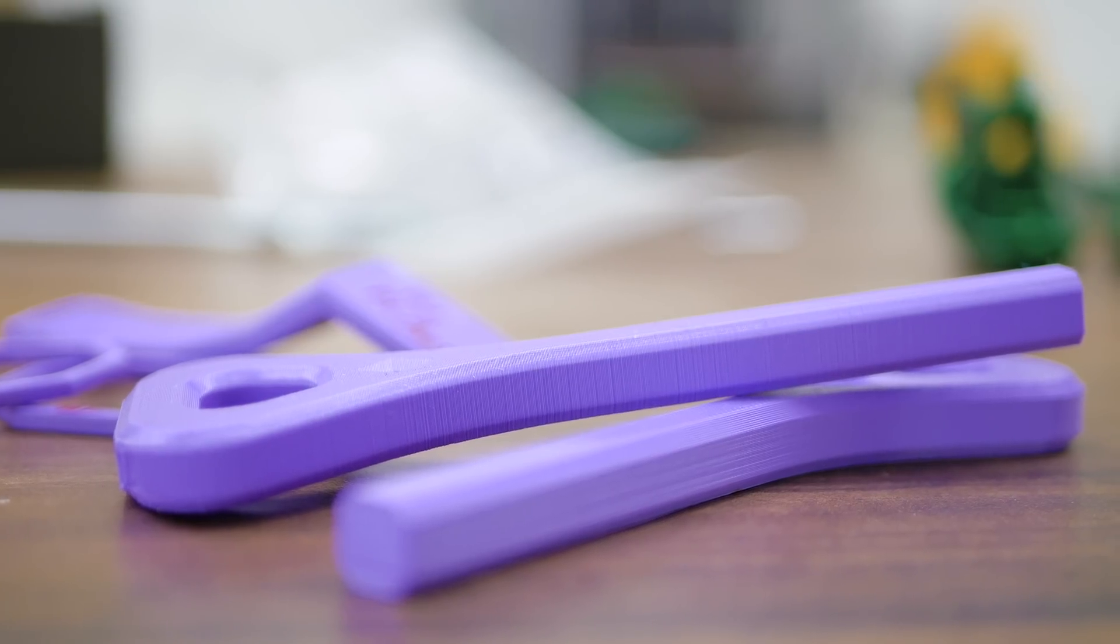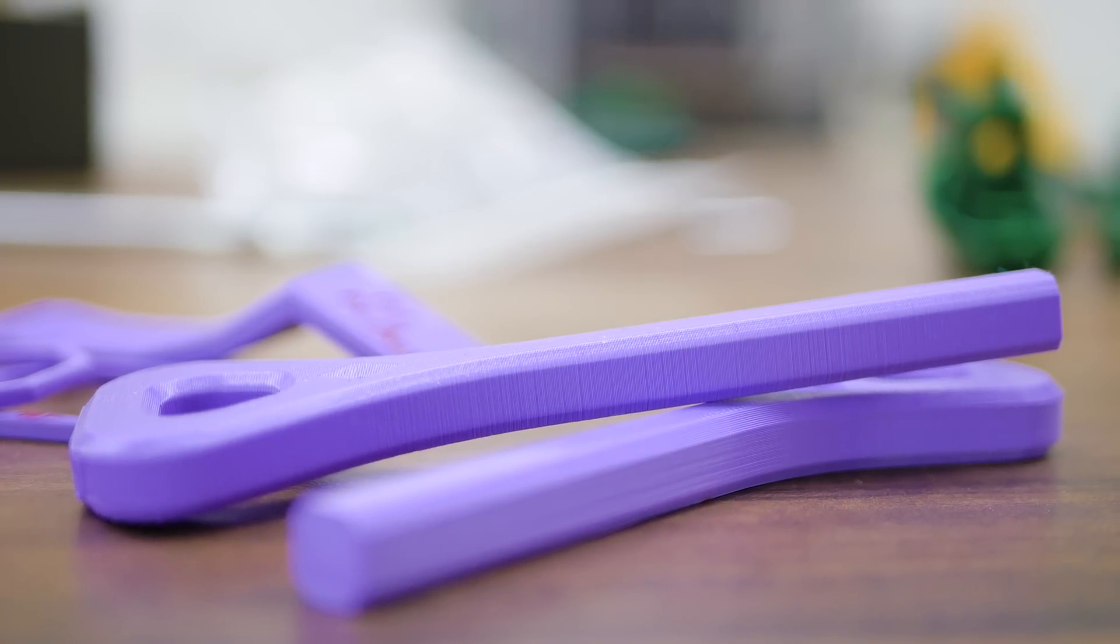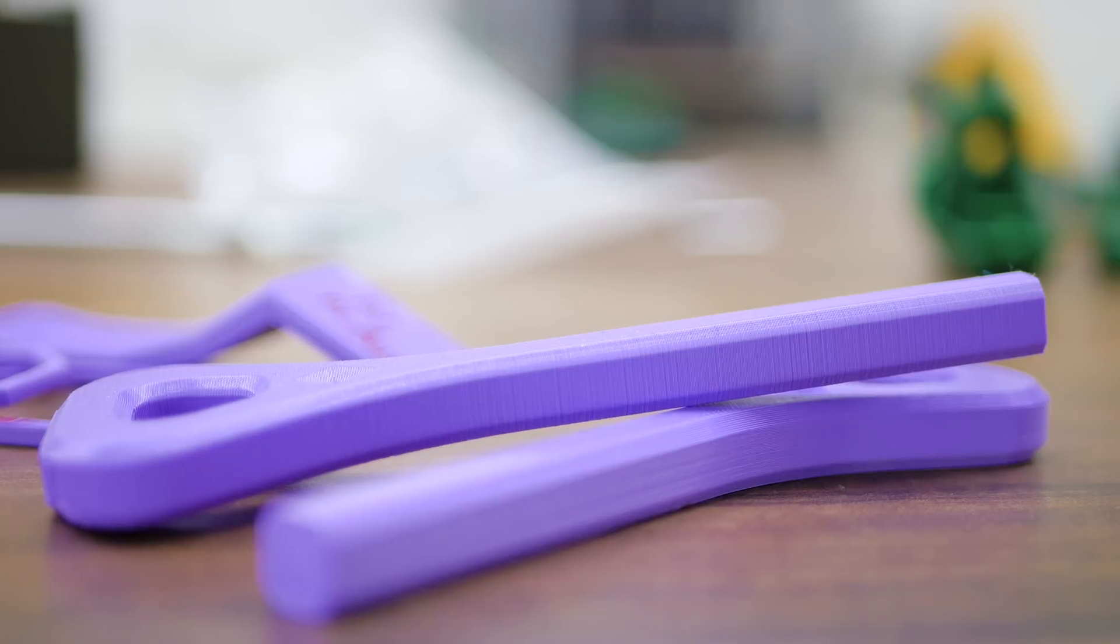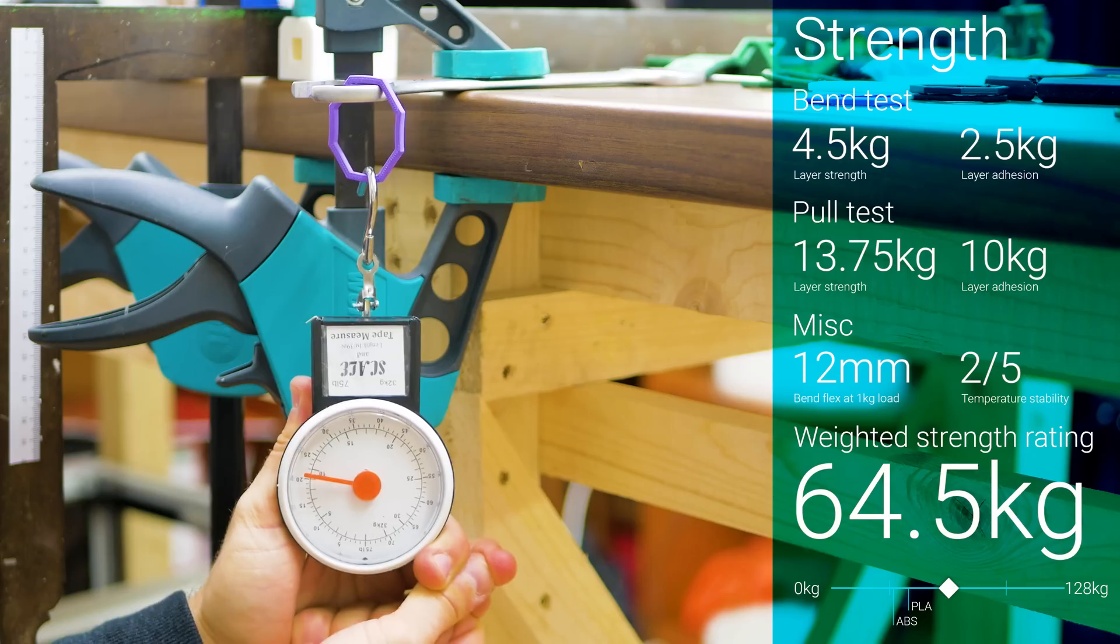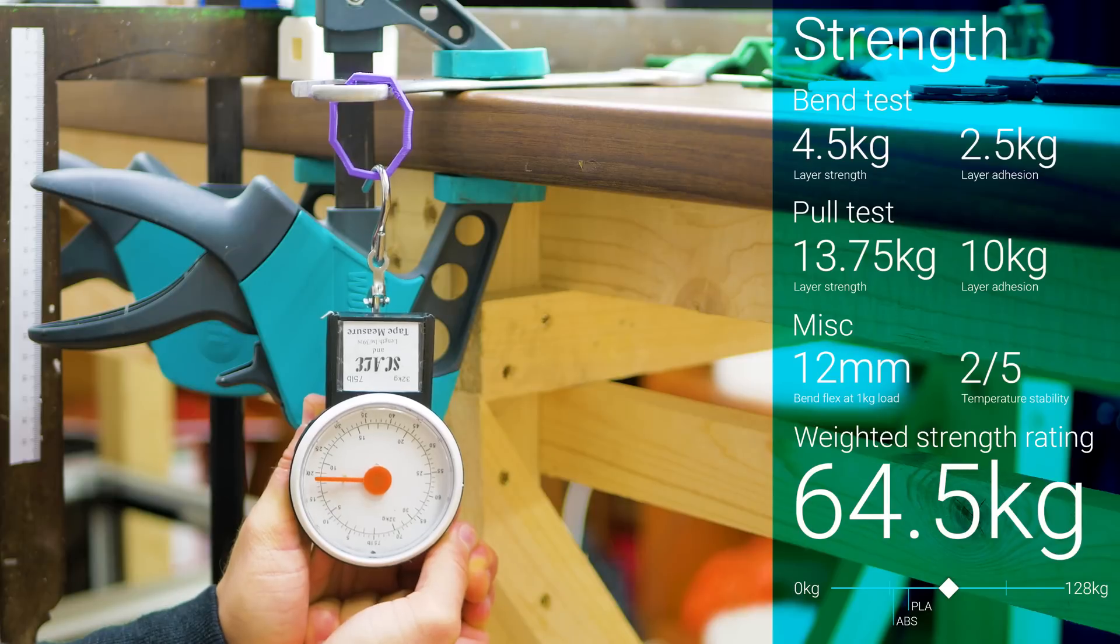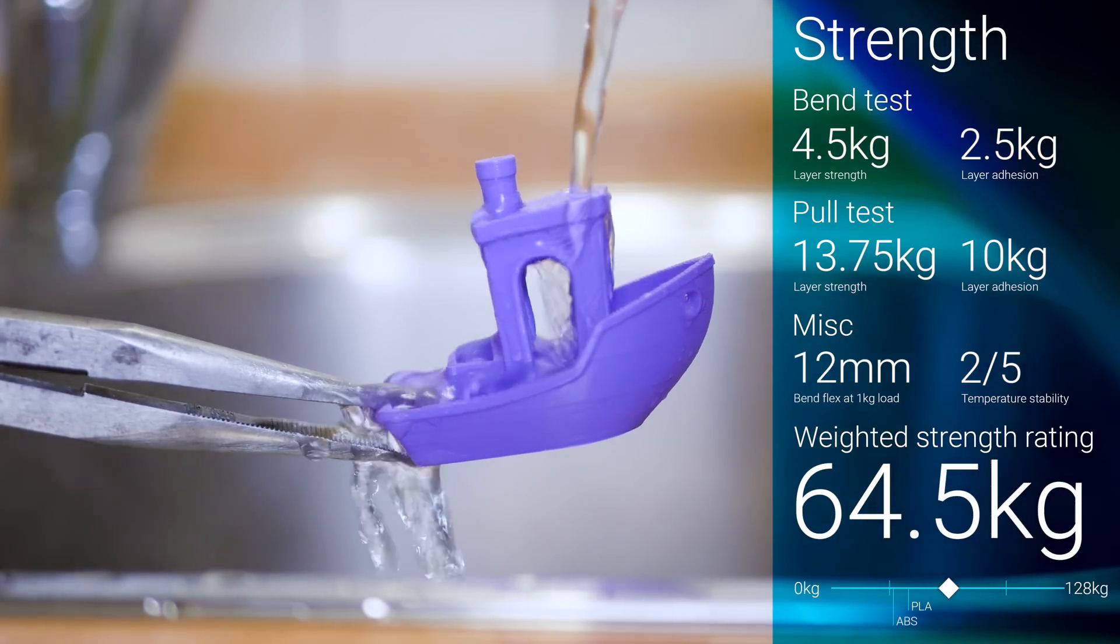But I did expect strength and particularly layer adhesion to suffer from the low print temperatures, which was absolutely not the case. Exactly the opposite, actually. Layer adhesion was excellent and overall strength consistent, scoring the rigid ink PLA the highest strength rating yet at 64.5kg.